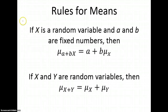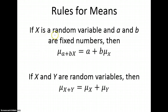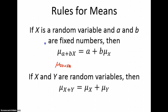Here's that rule for means. If X is a random variable and A and B are fixed numbers, then the mean of A plus BX is A plus B times the mean of X. So what we did in that example: the mean of 20 plus 2X was equivalent to 20 plus 2 times the mean of X. That was from Chapter 1.